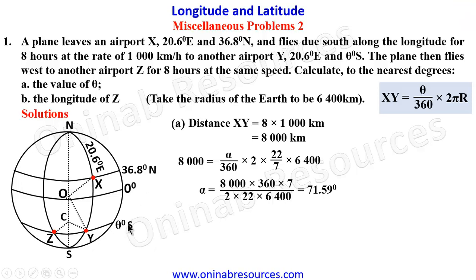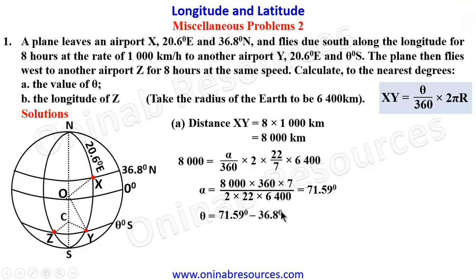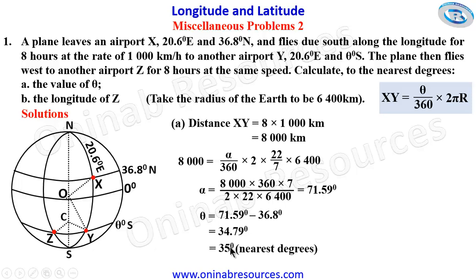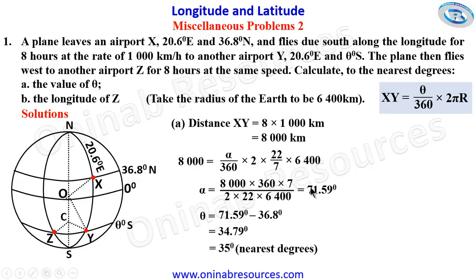Since X is in the north and Y is in the south, the angular distance alpha (71.59°) spans both hemispheres, meaning alpha equals the latitude of X plus theta. Therefore, theta = 71.59° − 36.8° = 34.79°, which to the nearest degree gives 35 degrees. We subtracted because they are in different regions, and the value of alpha is greater than the latitude of X.